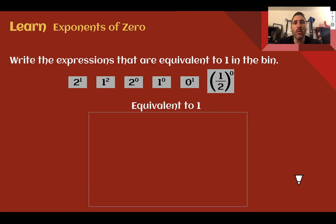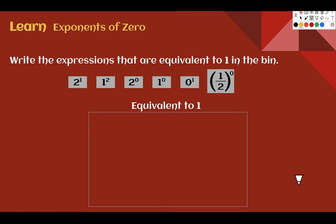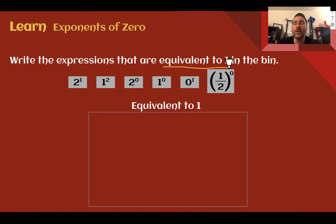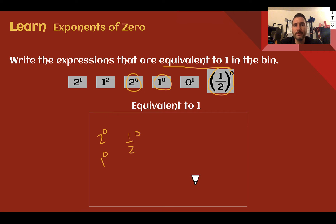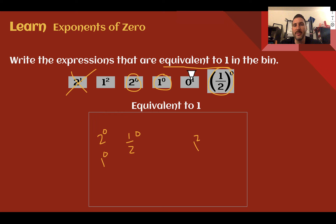Write the expressions that are equivalent to 1. Pause the video and see if you can figure out which ones will go into the bin. Anything to the zero power equals 1, so 2 to the zero, 1 to the zero, and 1 half to the zero all equal 1. 2 to the first power is 2 — not 1. 1 squared, or 1 times 1, is actually equal to 1, so that one goes in. 0 to the first power is 0, not 1, so that one does not. So the three zero-power expressions and 1 squared go in the equal-to-1 bin.